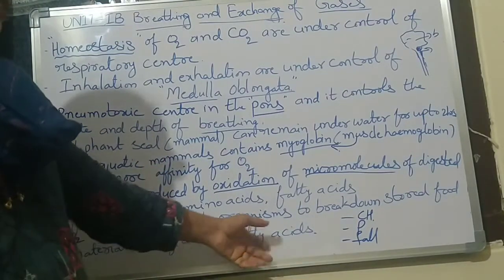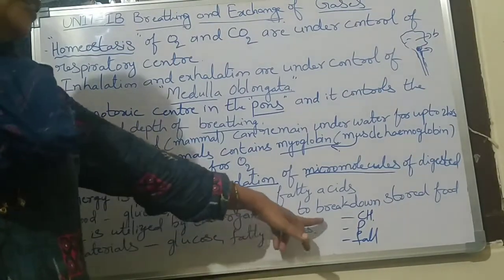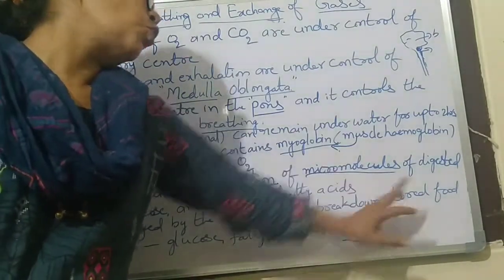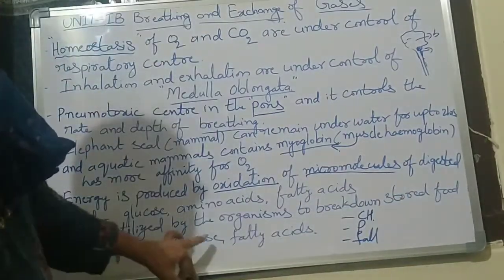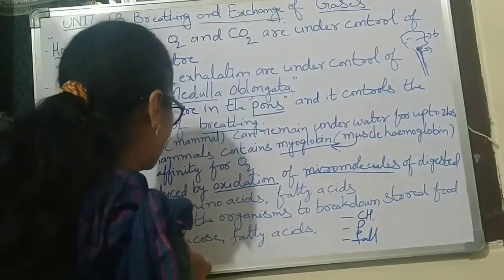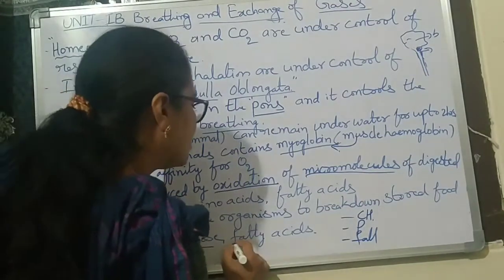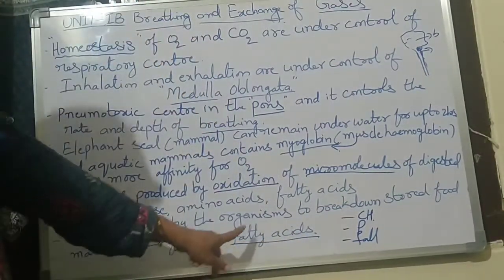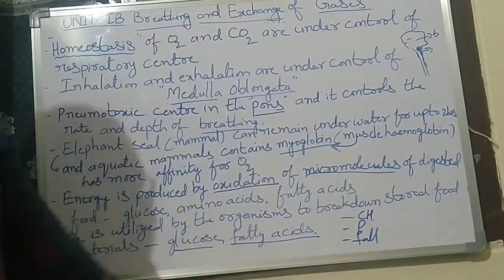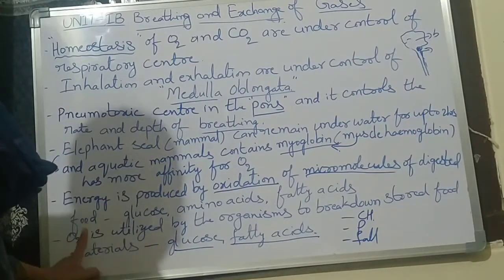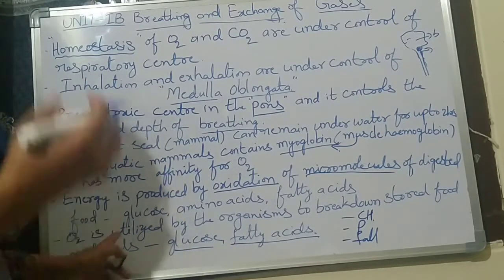Oxygen is utilized by organisms to break down stored food materials, glucose and fatty acids. Mainly glucose and fatty acids are stored in our body, and by respiration we take in oxygen.